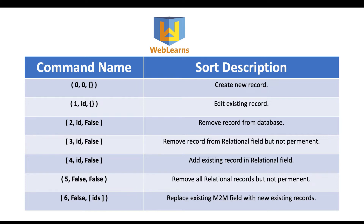The last command is six (6, False, [list of IDs]). This is widely used for many-to-many fields. Command six overrides the many-to-many field with the specific IDs given in the list, replacing whatever was there before.